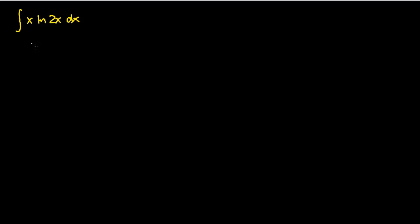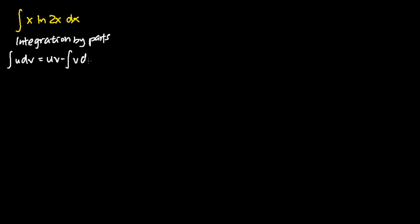Basically, we can solve this problem by applying the integration by parts technique. The integration by parts technique tells us that if I were to let a term as u and the other term as dv, this equals uv subtracting away the integral of v du, in which to find my v I will integrate dv, and to find my du I will differentiate u.